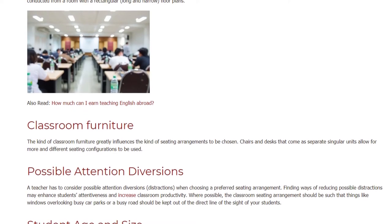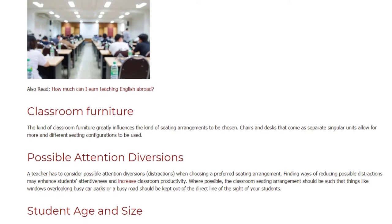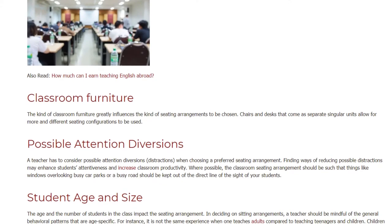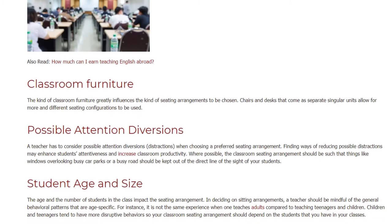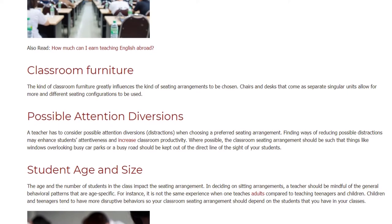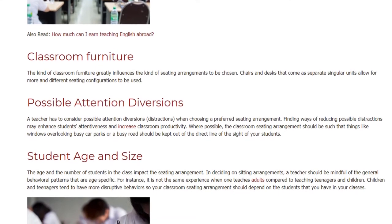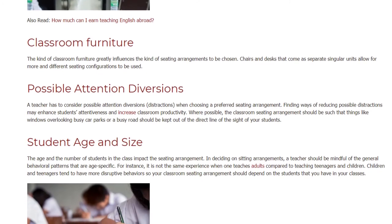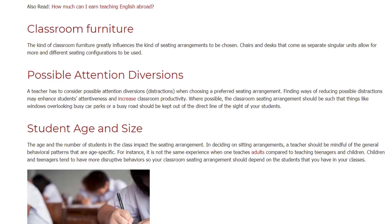Possible attention diversions: a teacher has to consider possible attention diversions and distractions when choosing a preferred seating arrangement. Finding ways of reducing possible distractions may enhance students' attentiveness and increase classroom productivity. Where possible, the classroom seating arrangement should be such that things like windows overlooking busy car parks or a busy road are kept out of the direct line of sight of students.